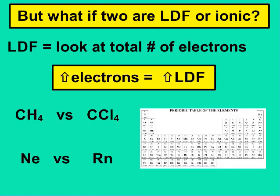If you're looking at two London dispersion forces, you're going to look at the total number of electrons — the more electrons it has, the stronger the LDF. So looking at CH4: carbon has six electrons and hydrogen has one, so four hydrogens and one carbon gives ten electrons total. Add carbon and chlorine — chlorine has 17, so 17 times 4 plus 6 gives 74. CCl4 has way more electrons, so its London dispersion forces are going to be stronger than CH4's.